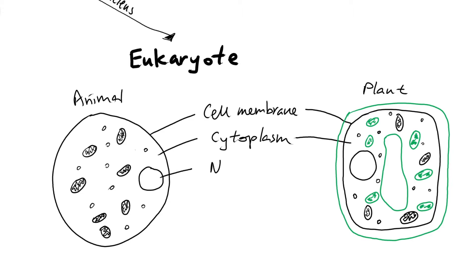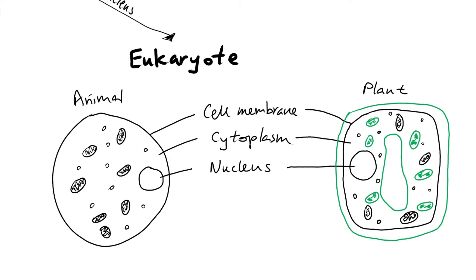Next, both animal and plant cells have a nucleus — as eukaryotic cells, they both contain this major large structure. They also both have ribosomes. Eukaryotic cells have a slightly bigger version of ribosomes than prokaryotic cells, but they still do the same function: protein synthesis — they make the proteins.